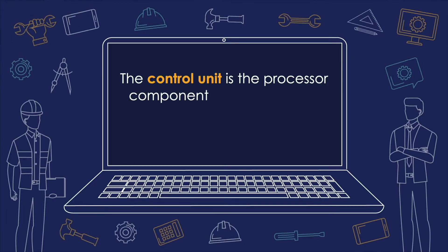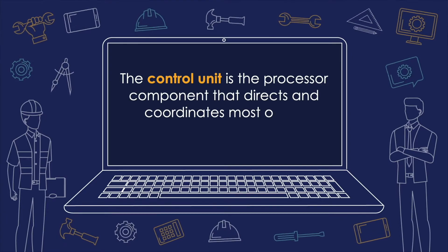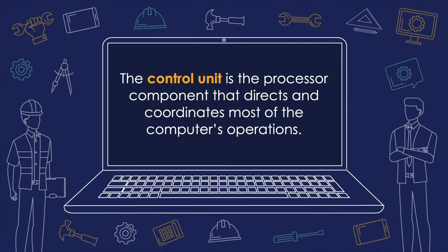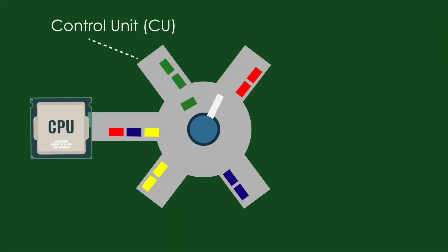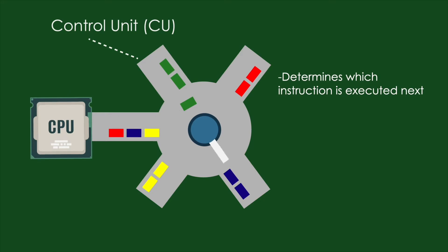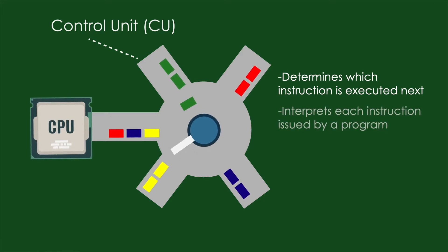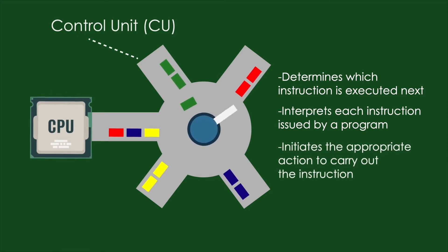The control unit controls the flow of data within the system. It is the processor component that directs and coordinates most of the computer's operations. The control unit has a role much like a traffic police — it determines which instruction is executed next, interprets each instruction issued by a program, and initiates the appropriate action to carry out the instruction.